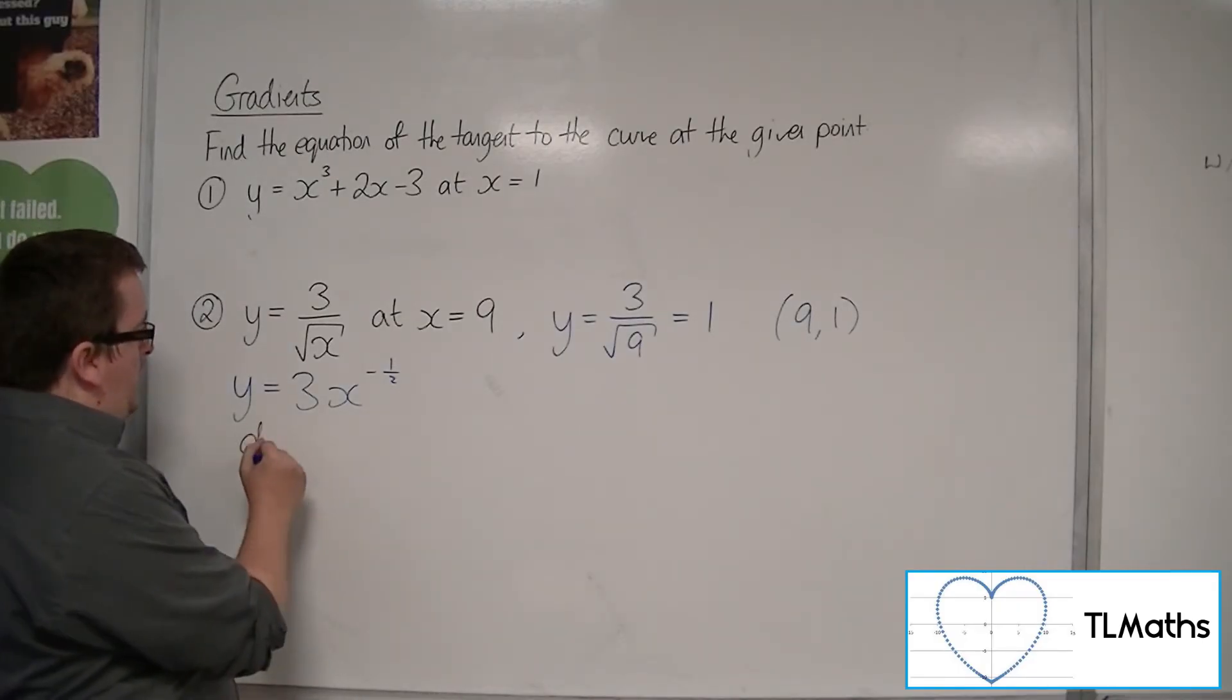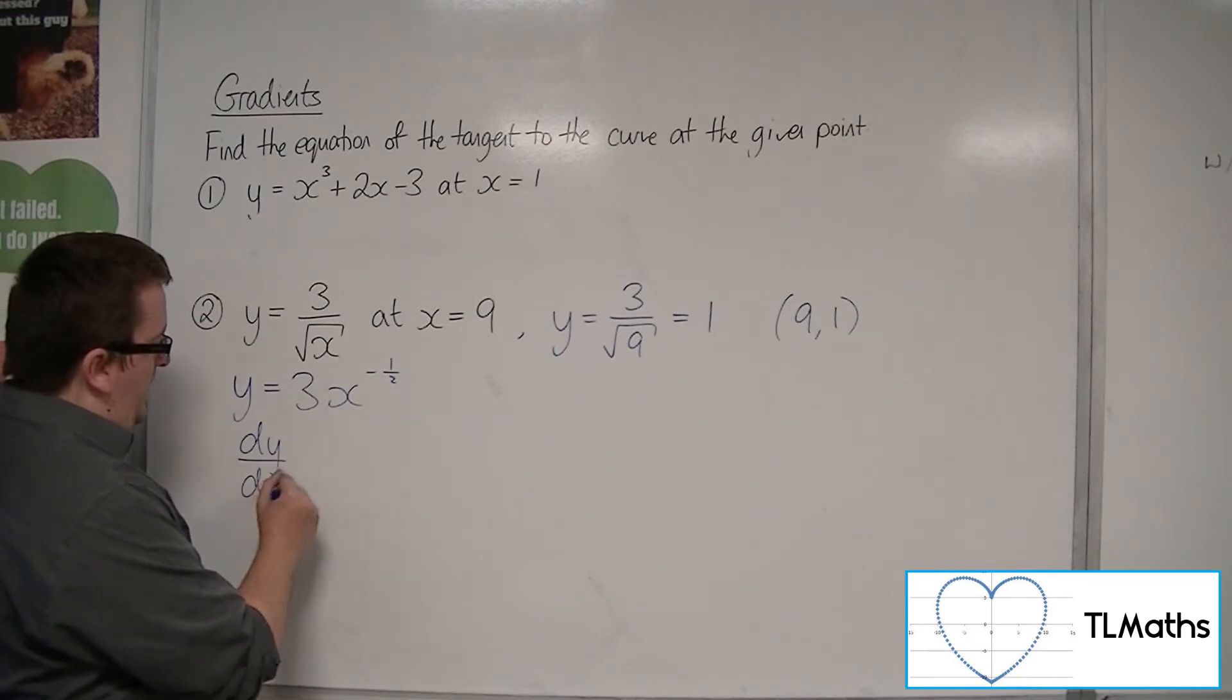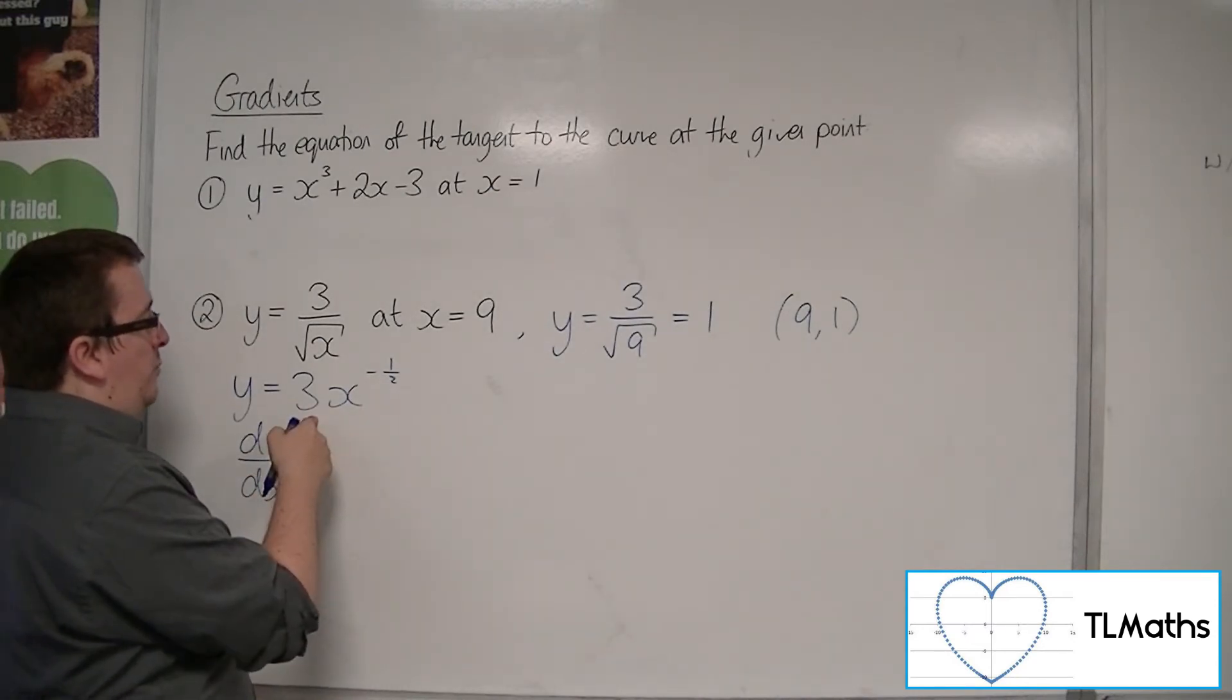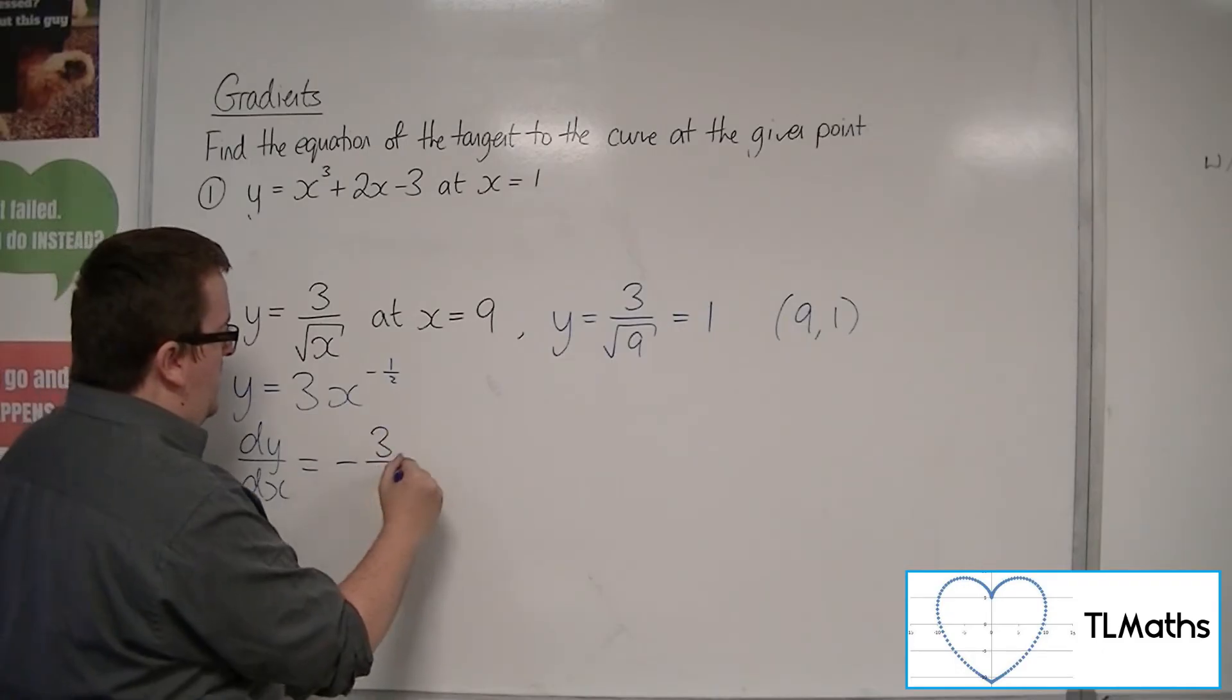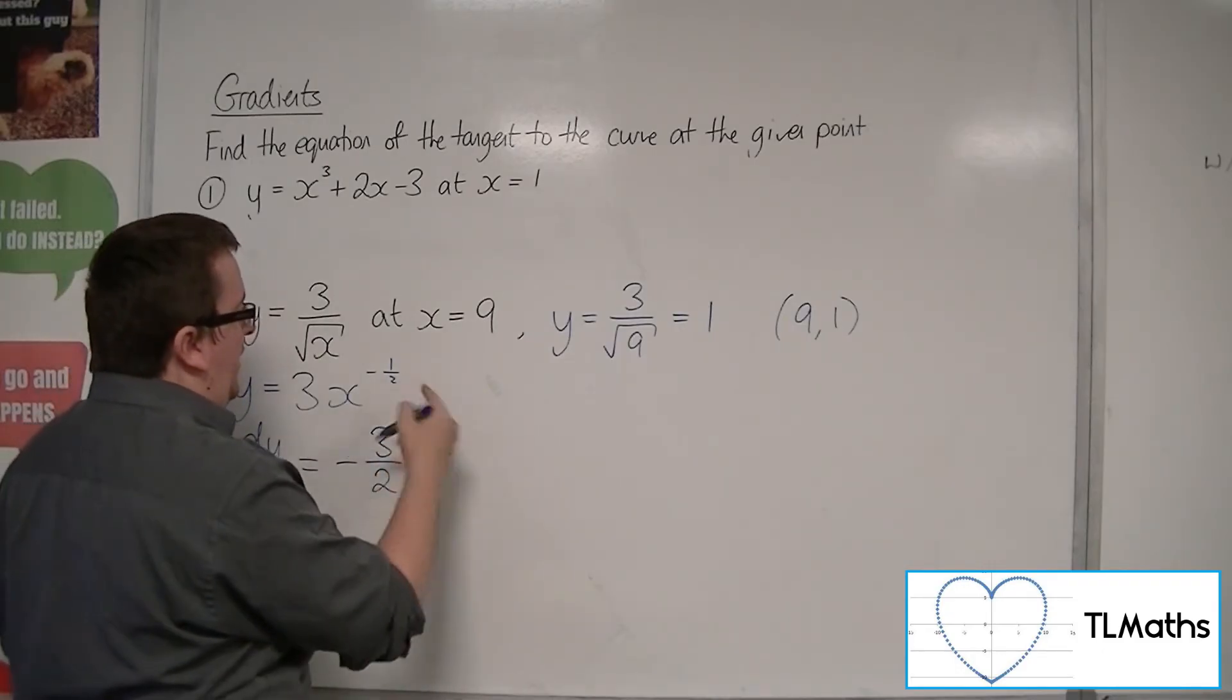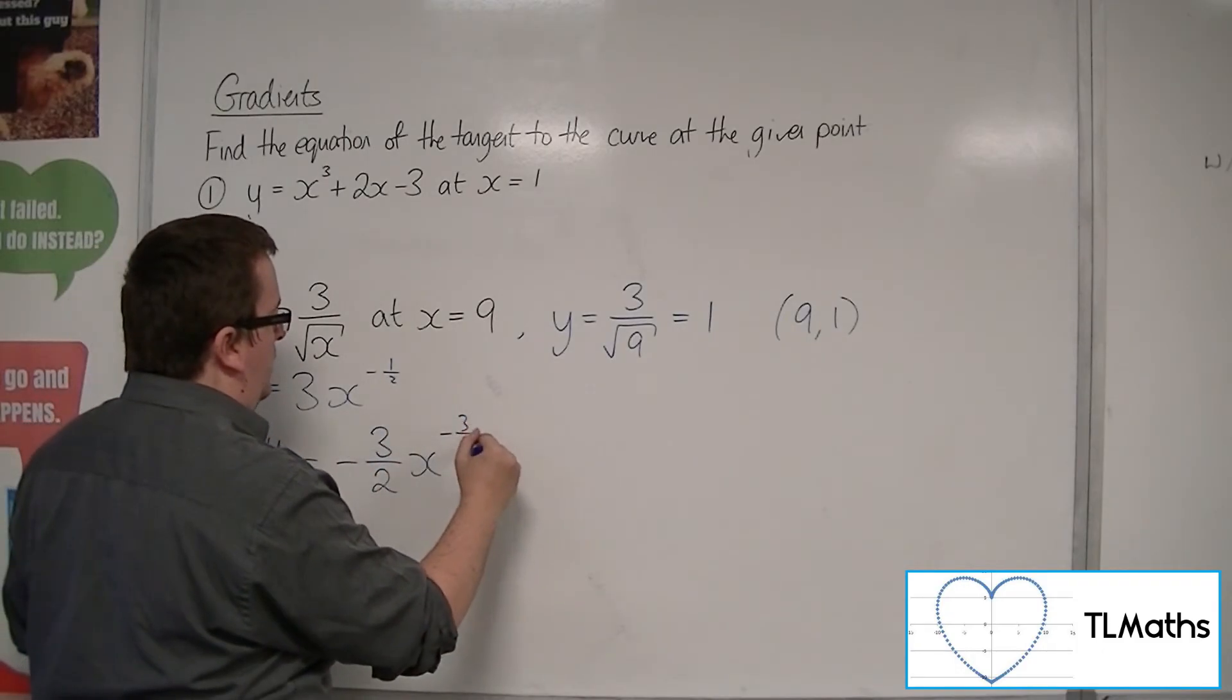So you can find the gradient function, dy by dx. So the minus 1 half comes down and multiplies with the 3. So minus 3 halves x. Take 1 off the power. So minus 3 halves.